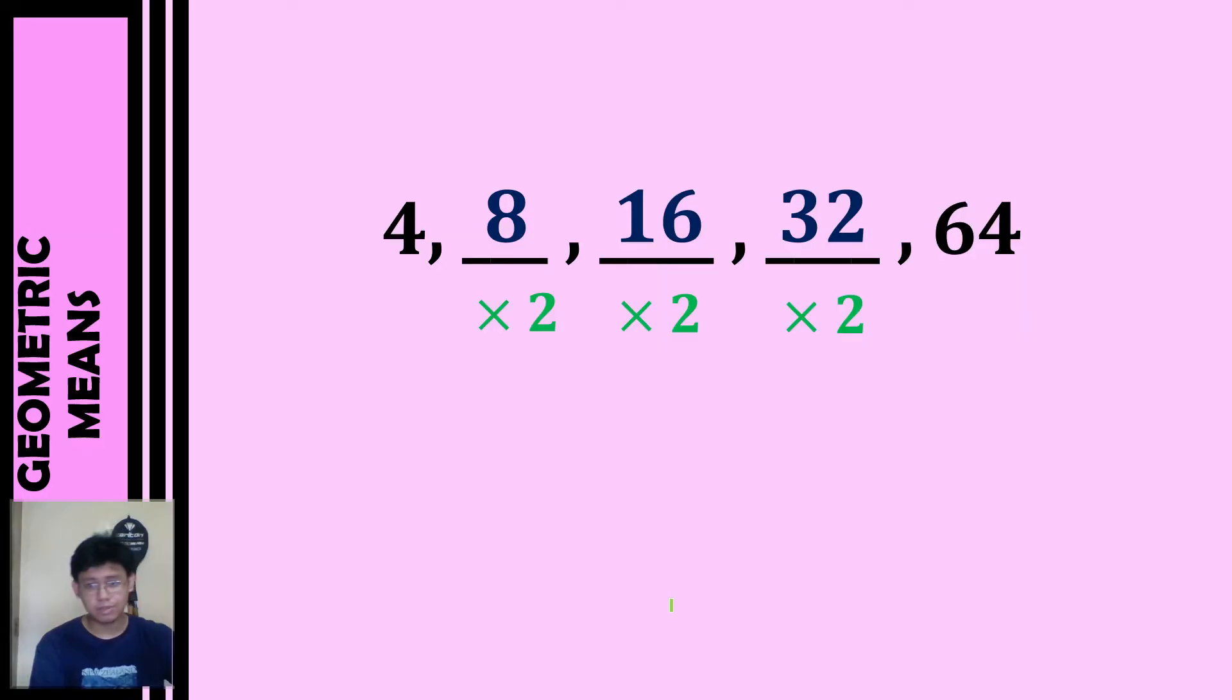Now that we have our common ratio, we will just multiply 2 for every term. So 4 times 2 gives us 8, 8 times 2 gives us 16, 16 times 2 gives us 32, and 32 times 2 equals 64.